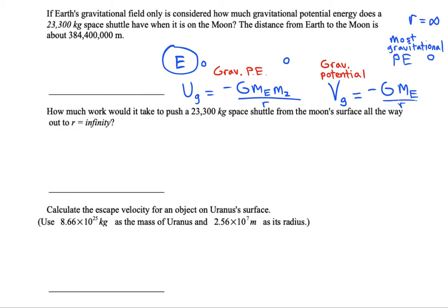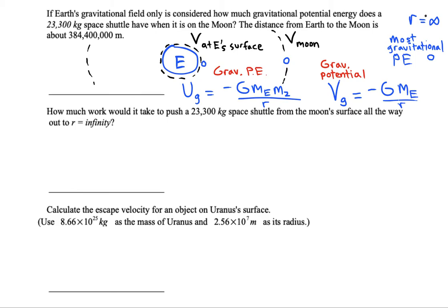The great thing about gravitational potential is you don't need to know the size of the mass in the field to have a meaningful value at any point in space. For example, we can calculate the gravitational potential at Earth's surface, at a certain distance away — such as a concentric sphere at the Moon's orbital radius — and even way out at r equals infinity.